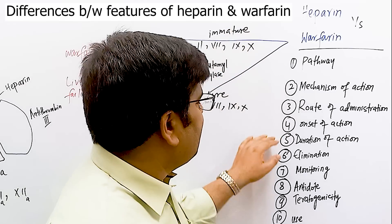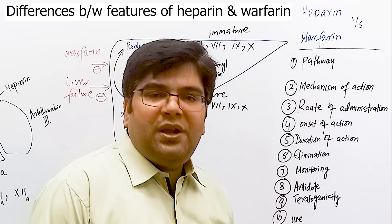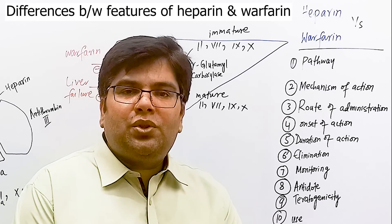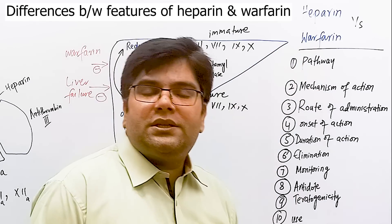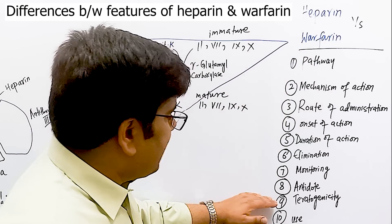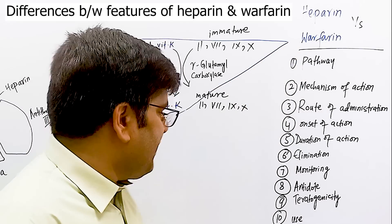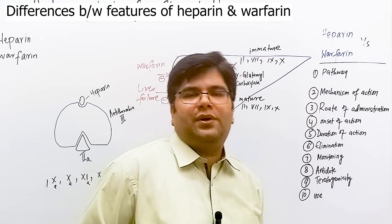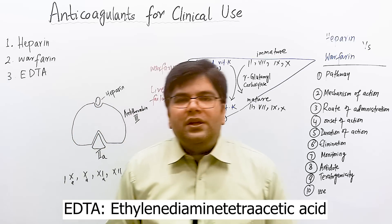The duration of action of heparin is 4 to 6 hours, whereas warfarin acts for several days. Heparin is eliminated through the kidneys; warfarin through the liver. Heparin is monitored by APTT (activated partial thromboplastin time), which tests the intrinsic pathway; warfarin is monitored by PT (prothrombin time), which tests the extrinsic pathway. The antidote for heparin is protamine sulfate; for warfarin it is vitamin K and fresh frozen plasma. Heparin is not teratogenic and does not cross the placenta, so it is safe during pregnancy; warfarin is teratogenic and cannot be given during pregnancy. Heparin initiates anticoagulant therapy; warfarin maintains it.